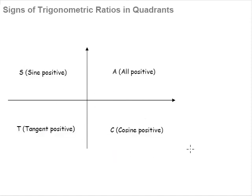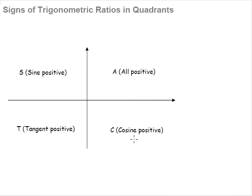This table now summarizes what we have found out so far. In the first quadrant, all the basic trig ratios — sine, cosine, and tangent — will be positive. In the second quadrant, only sine is positive. In the third quadrant, only tangent is positive and the rest are negative. In the fourth quadrant, only cosine is positive and everything else will be negative.